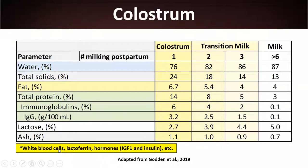The table is simplified, but there are also white blood cells that play a key role in colostrum secretion, lactoferrin — a molecule that helps prevent infections — and hormones like IGF-1 and insulin. These are important not only for passive immunity transfer to the calf but also for GI tract development.